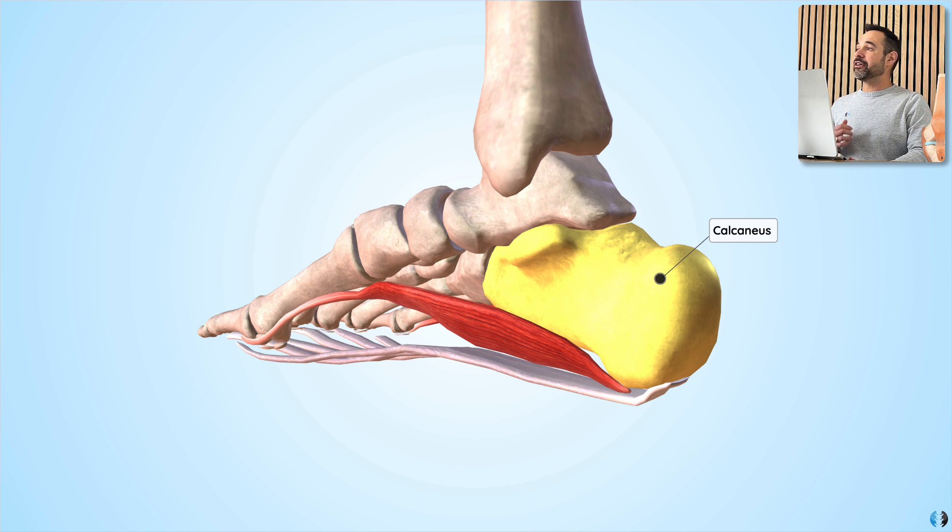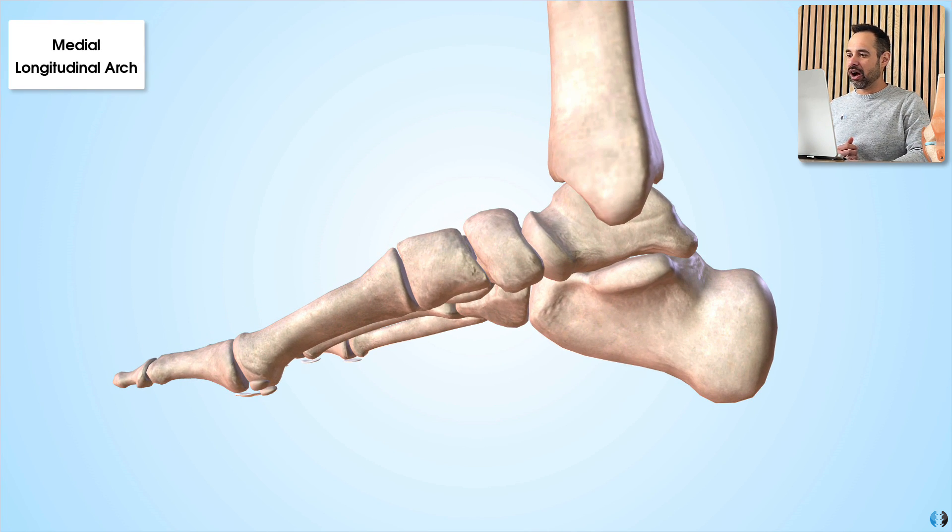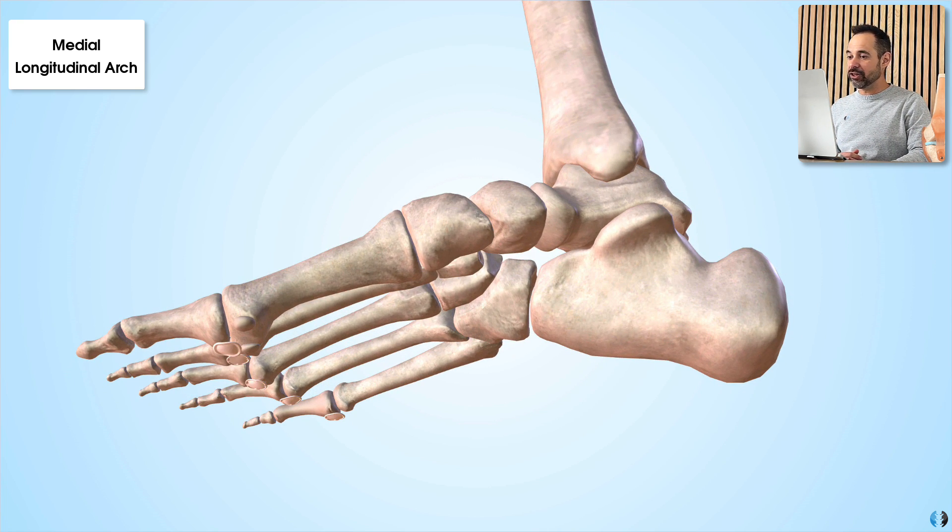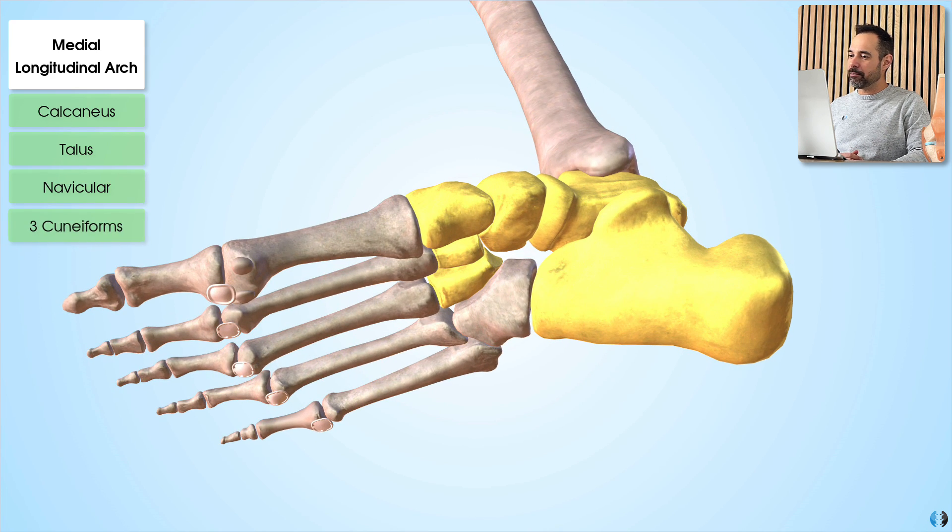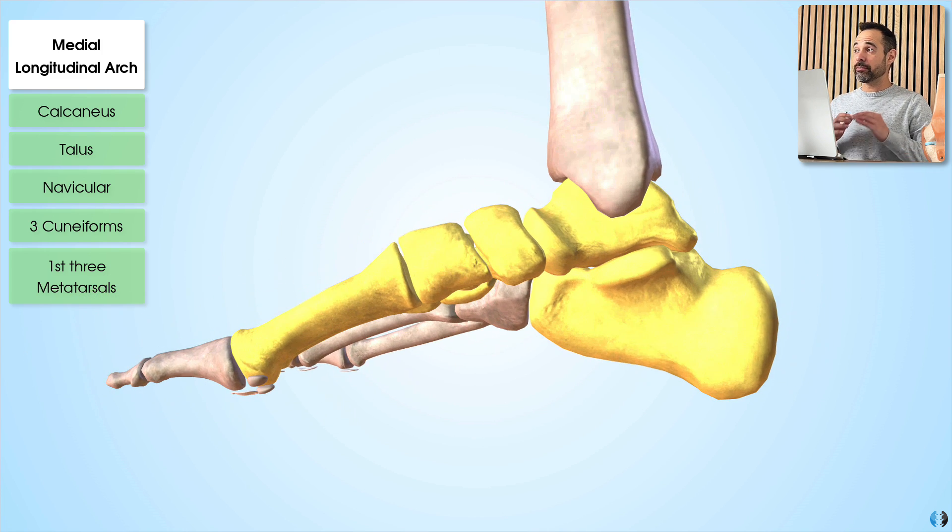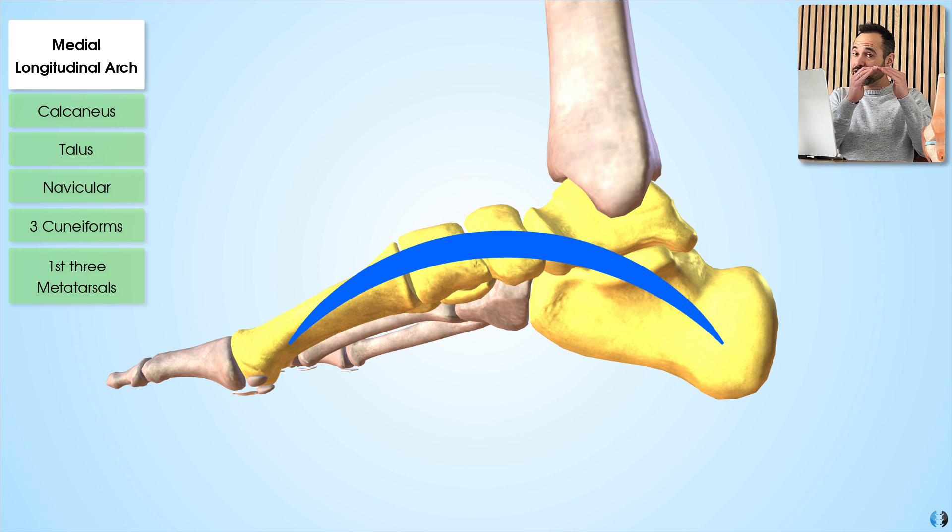And then we have the medial longitudinal arch of the foot. This is made up of crucial bones on the medial side of the foot, including the calcaneus, the talus, the navicular bone, the three cuneiform bones, and the first three metatarsals. And if we look at these bones from the medial side, we can almost appreciate that they form a bridge or an arch on the medial side of the foot.